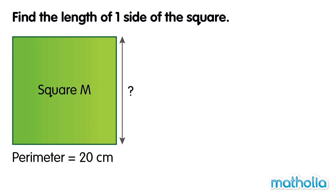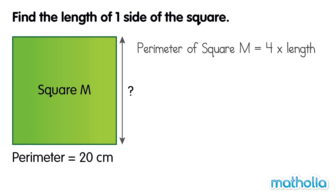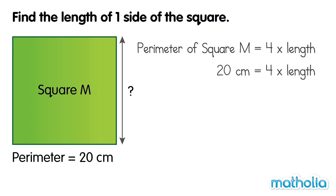Let's find the length of one side of this square. The perimeter of square M is 4 times the side length. We know the perimeter is 20 cm. So we can write 20 cm equals 4 times length. To find the value of one side length, we divide 20 cm by 4. 20 cm divided by 4 equals 5 cm. So the length of one side of the square is 5 cm.